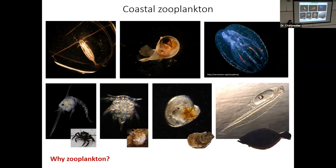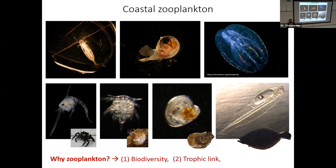Why use zooplankton to determine potential effects of artificial light in the coastal ecosystem? Zooplankton represent a really diverse group — different shapes, sizes, and species, with multiple phyla represented. If we can figure out what's happening within the zooplankton community, we can learn more about the overall ecosystem picture. They serve as a trophic link — essentially fish food — and they eat microalgae that many other animals can't, passing energy up the food web. Because they eat algae, they migrate up and down and carry things like carbon, so understanding where they go matters for nutrient cycles.